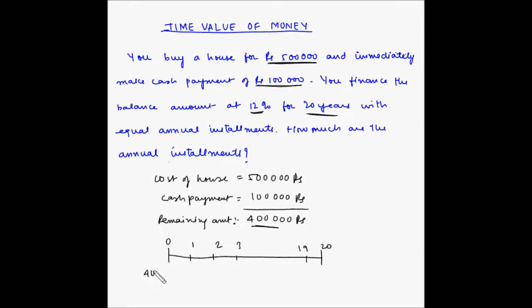The loan amount or the present value is 4 lakh rupees. The rate of interest is 12%, and we need to find out what is the annuity amount. Now again, the installments are equal, so it will be A throughout the time frame.